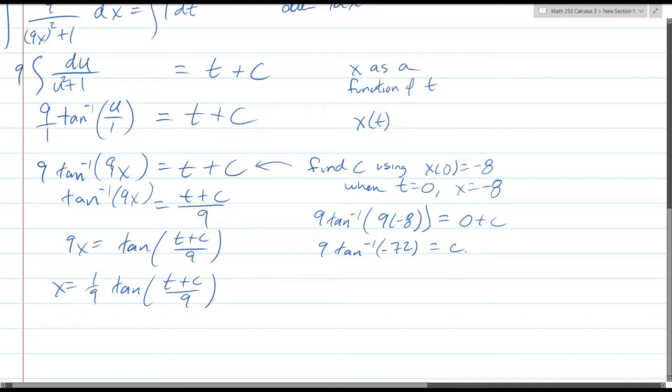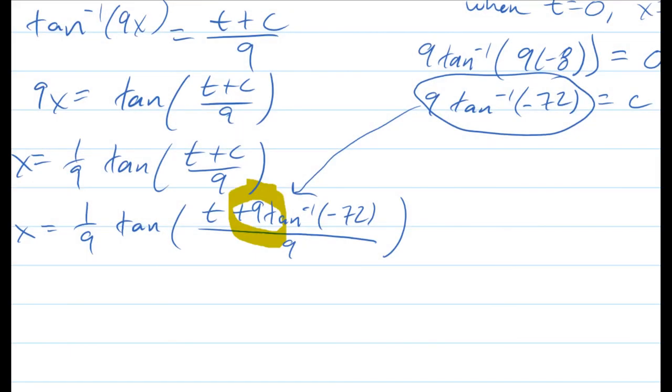Not much you can do here other than write it as tangent inverse of negative 72 equals c. And now you need to be, I believe, in radian mode unless it says degrees somewhere, but we should be in radian mode here. But what I'm going to do to just play it safe, I'm just going to leave this whole tangent of t plus this whole value in that form right here for our constant c. There we go. Don't forget the coefficient like I did.